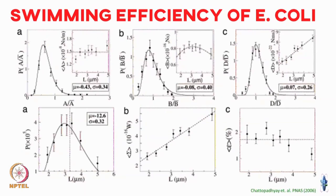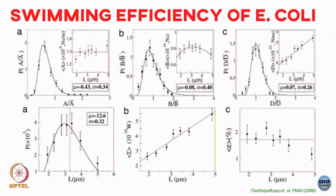These are experiments where they drop the propeller into a liquid and find full distributions of the propulsion matrix elements a, b, and d. From the mean values of these elements for a given helical propeller, you plug into the efficiency expression, and as a function of the length of the propeller you can plot the efficiency — it hovers around 1 to 2 percent, with a mean efficiency of roughly 1.7%.